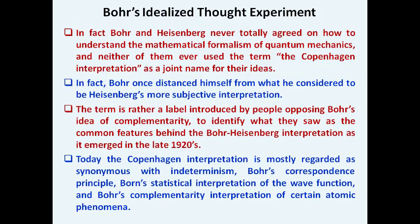Bohr once distanced himself from what he considered to be Heisenberg's more subjective interpretation. The term is rather a label introduced by people opposing Bohr's idea of complementarity to identify the common features behind Bohr and Heisenberg's interpretations as they emerged in the late 1920s. As of now, the Copenhagen interpretation is mostly registered as synonymous with indeterminism, Bohr's correspondence principle, Bohr's statistical interpretation of the wave function, and Bohr's complementarity interpretation of certain atomic phenomena.